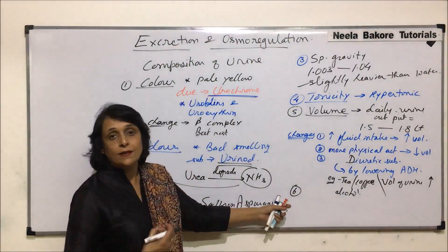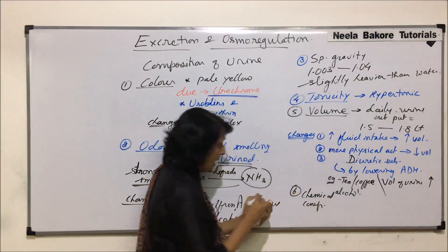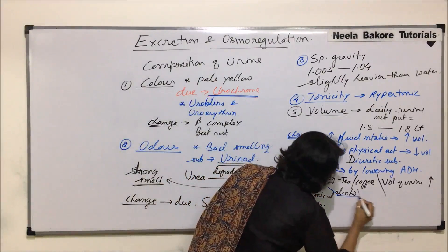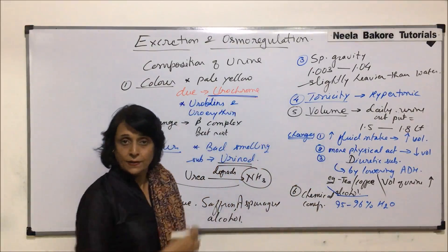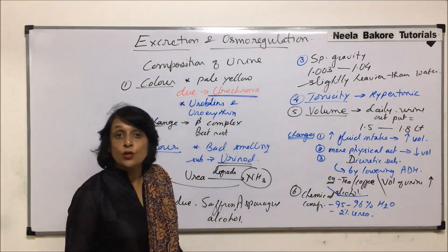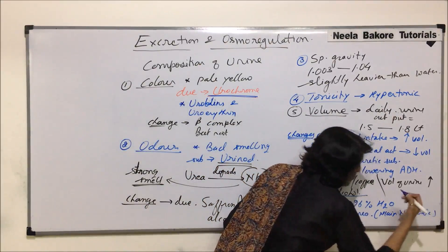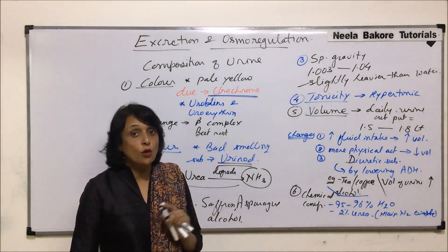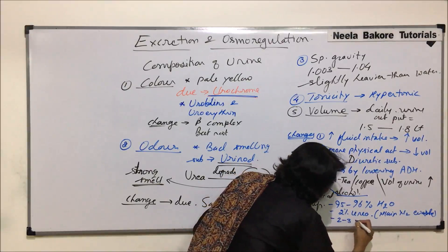The last point is the chemical composition of urine. About 95 to 96 percent of urine is water — that is the main component. About 2 percent is urea, which is the chief nitrogenous waste. Urea is the main nitrogenous waste found in human urine, and that is why humans are called ureotelic. The remaining 2 to 3 percent are other things.